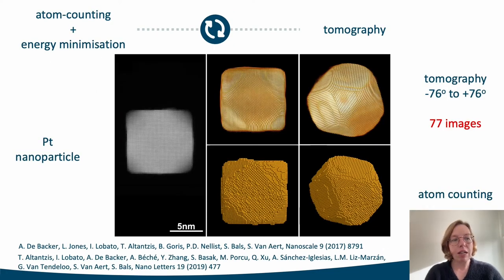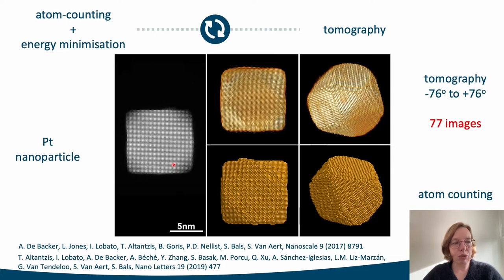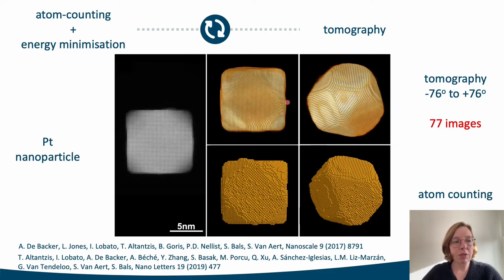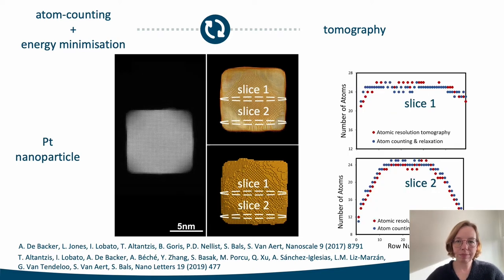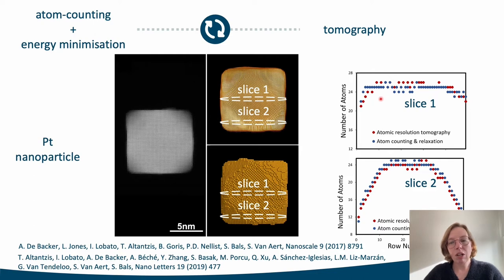Obviously the question arises: how reliable is this 3D atomic structure resulting from just a single 2D image? To investigate this, we reconstructed a platinum nanoparticle by combining atom counting and energy minimization using molecular dynamics simulations, and compared these results to the outcome when using atomic resolution tomography. When comparing both reconstruction techniques, one observes a close match. Moreover, when comparing atom counts from both methods through different slices, there is an excellent agreement demonstrating that even single image acquisitions enable us to retrieve a rather complete 3D picture of the underlying atomic structure.